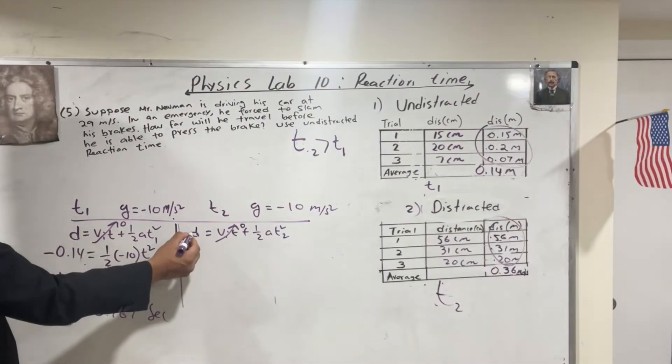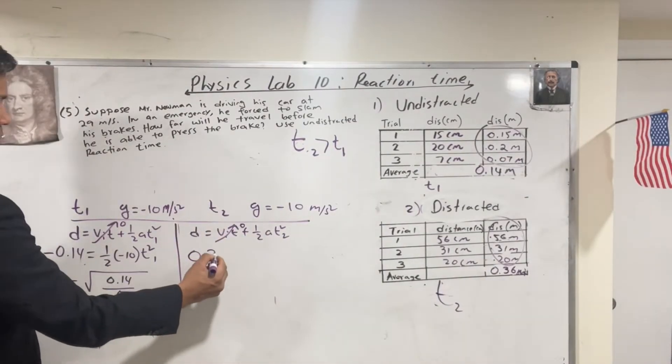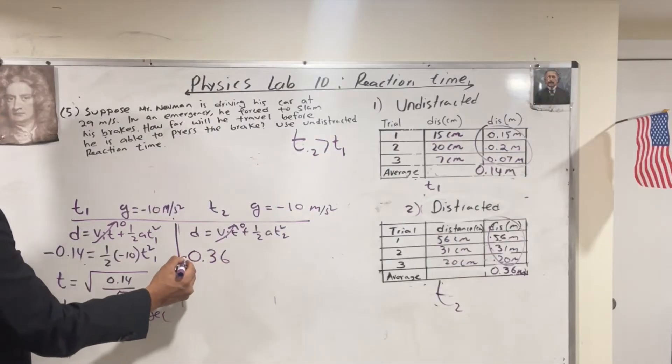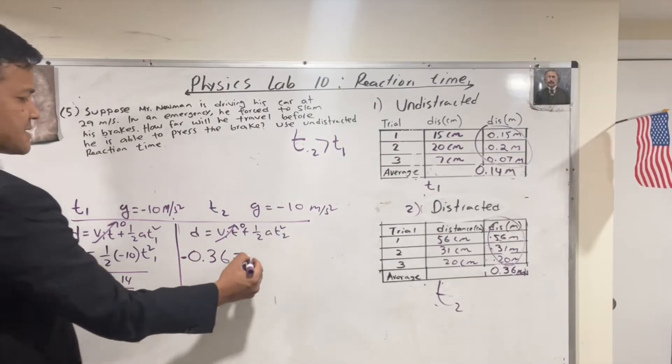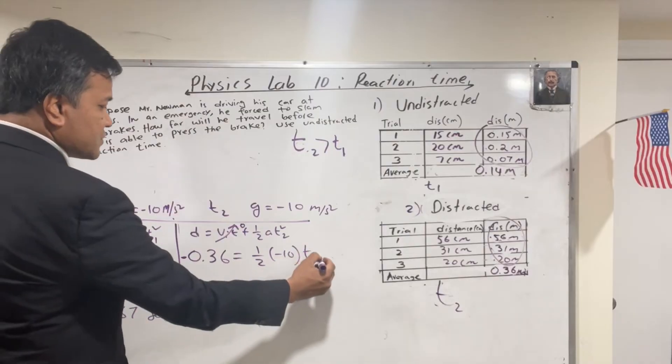Now, let's do this one. D is equal to 0.36. 0.36. But that is wrong. Put negative over here is half negative 10 T2 squared.